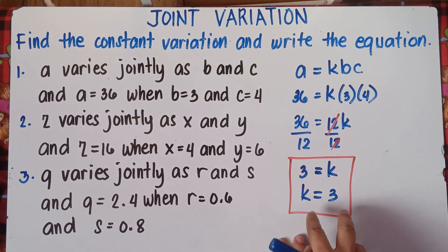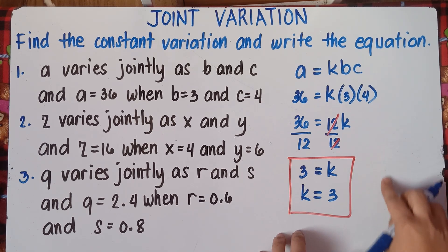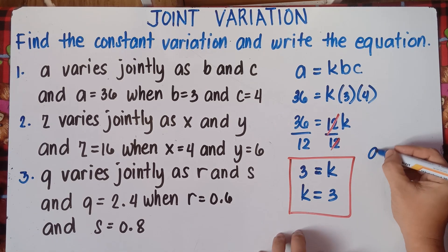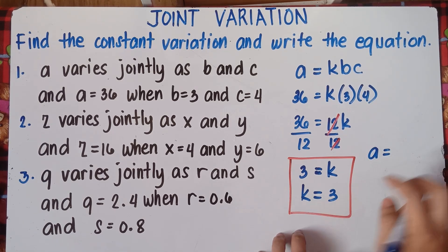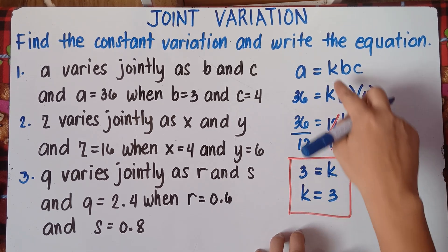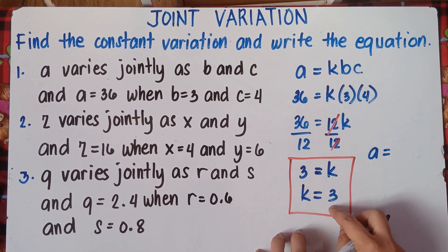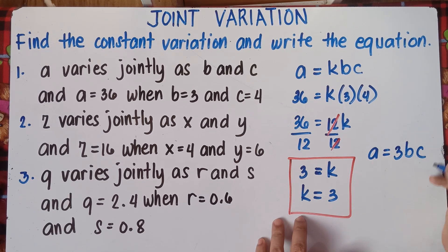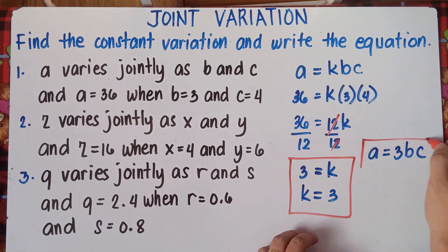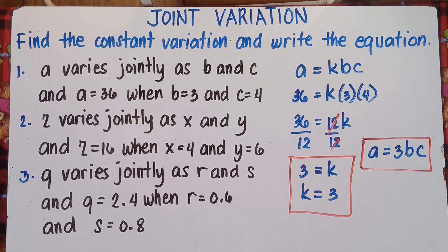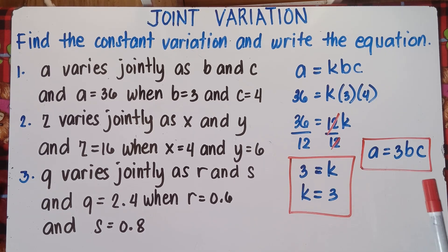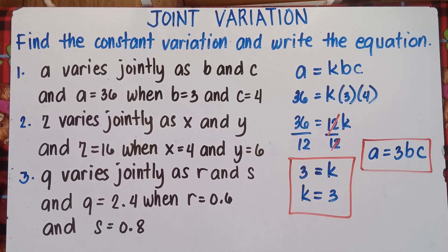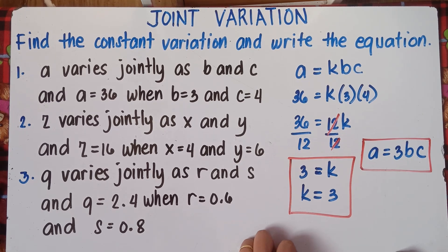Now once you get K, you can write the equation. Simply substitute K into the equation. Our K is 3, so the equation will be A equals 3BC. That's the answer for number 1. Simply get K, and once you get K, substitute K into the equation. Easy, right?